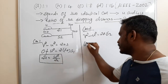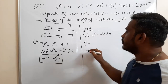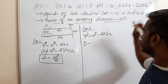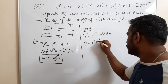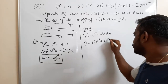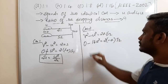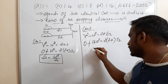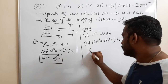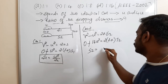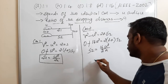The stopping distance is S2. The final velocity of the second car is 0. The initial velocity of the second car is 4u, so 4u squared equals 16u². So: 0 minus 16u² equals 2 into minus A into S2. The two negatives cancel out.